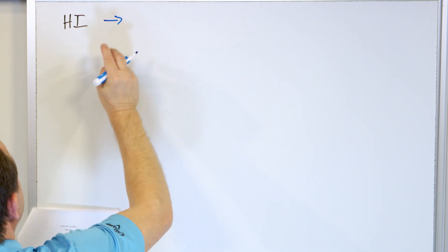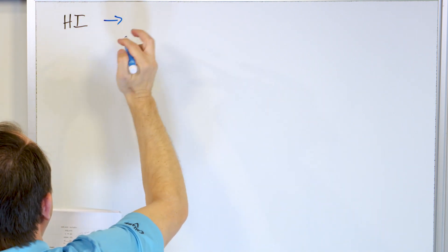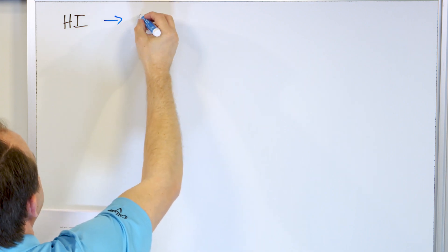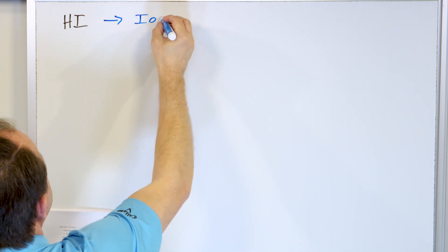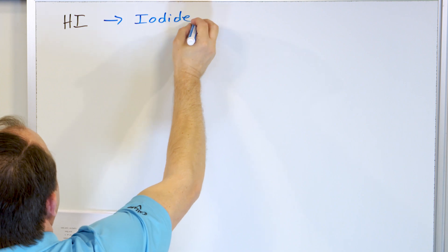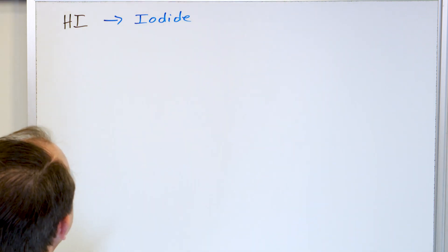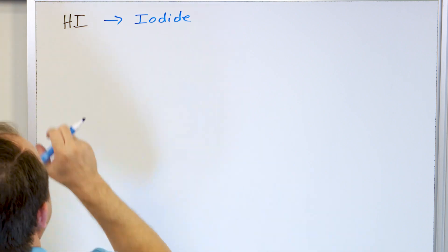Now what is the ion associated with this? It's iodine, which when we name its ion, is iodide, right? Chloride, bromide, iodide. That's how we name it, or that's what the name of the ion is.